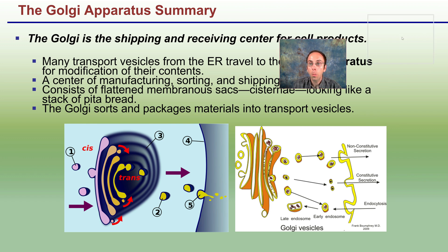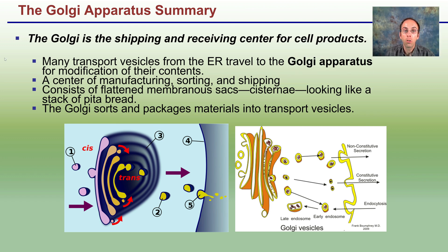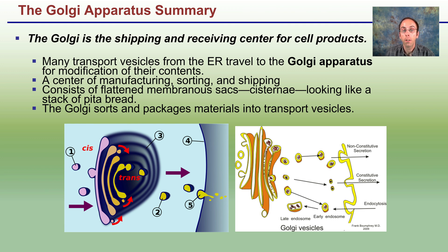The Golgi is the shipping and receiving center for cellular products. Many transport vesicles from the ER travel to the Golgi for modification — it's the center of manufacture, storing, and shipping. The flattened membrane sacs look like a pack of pita bread, giving a very high surface area to volume ratio. The Golgi stores and packages materials into transport vesicles to be released outside the cell or moved to a different location.